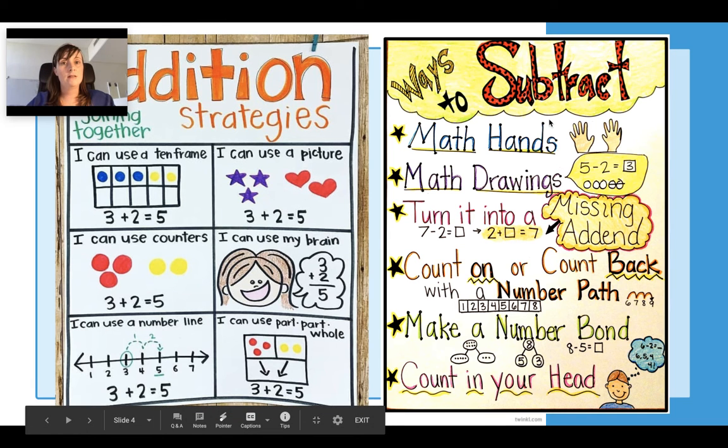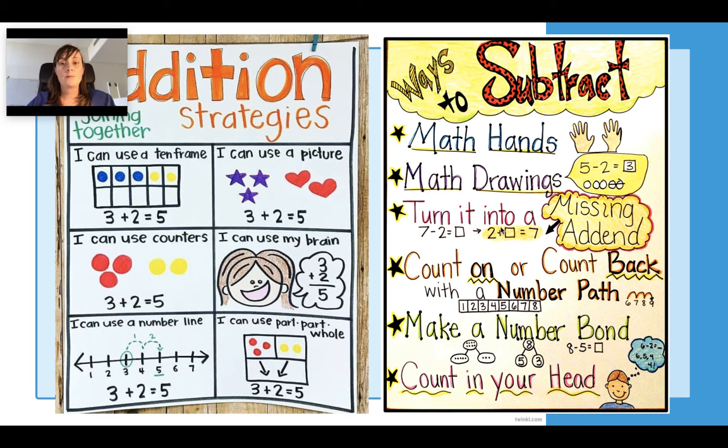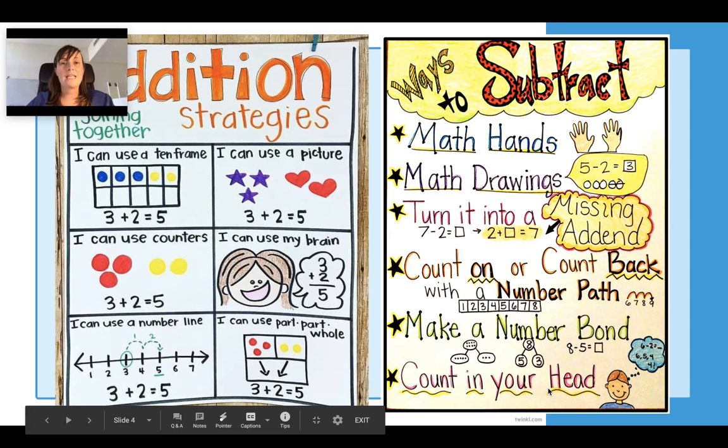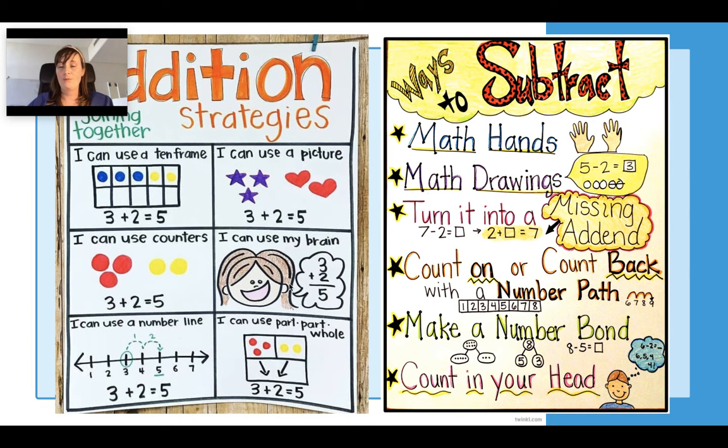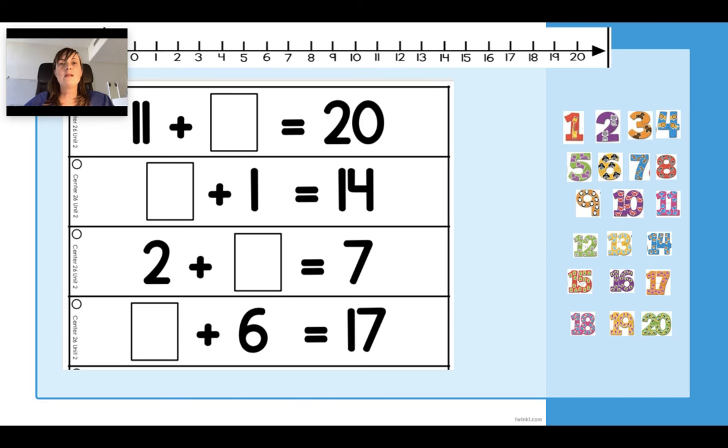When we're thinking about subtraction, we could use our fingers - do that for adding as well. We could do drawings and cross them out, we could do the inverse, turn it into the plus if we understand that better. We looked at inverse yesterday. We could count on or count back with a number line, we could make a number bond, and we can of course count in our head, just like with addition it's counting forwards, counting backwards using mental methods.